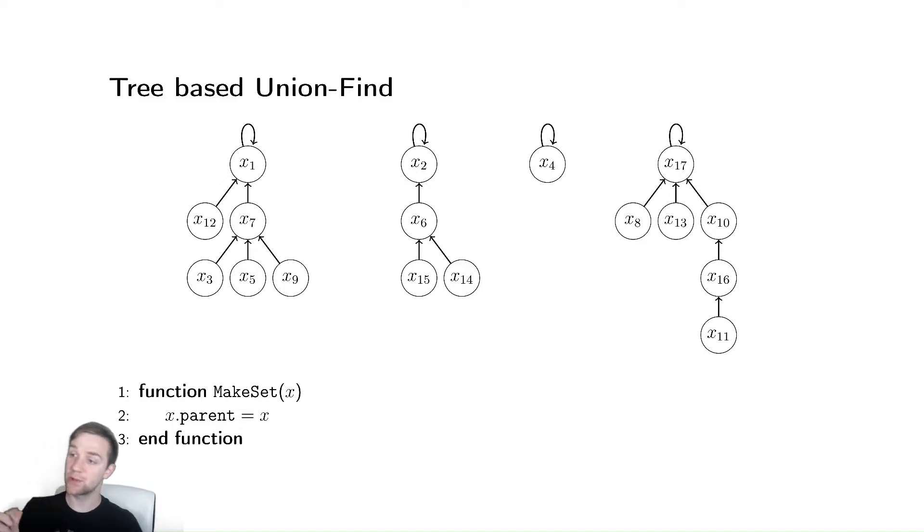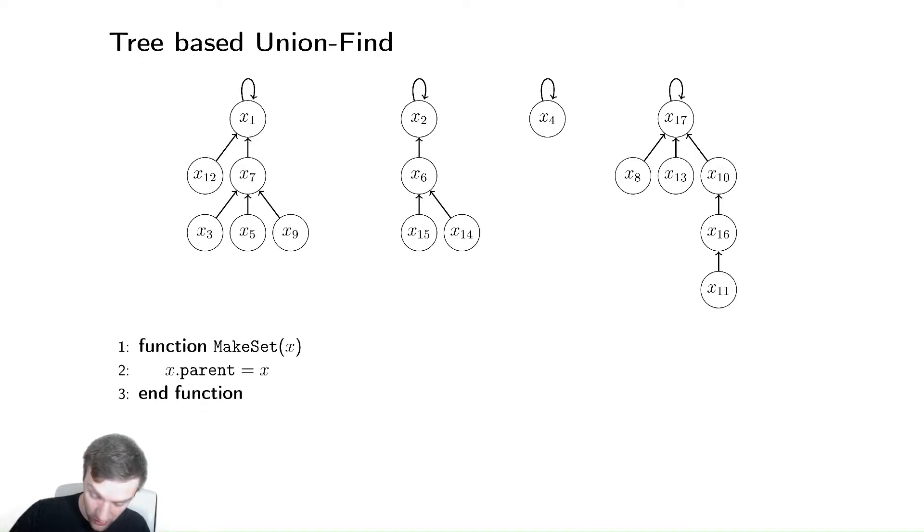So, what we're going to do is, we're going to take the sets, let's say we wanted to union the set that has x1 and the set that has x2. So suppose I made a call to union x6 and x3. If I did that, I would need to first find x6, then find its representative. So I would find x2.